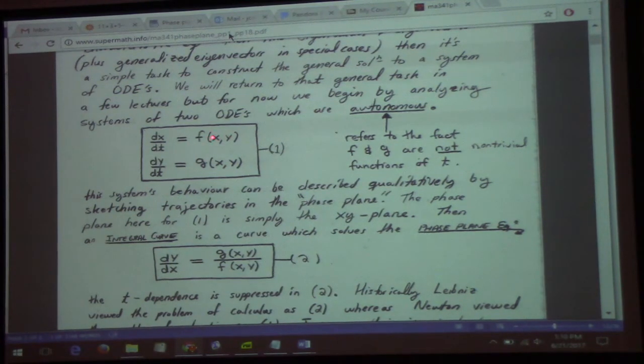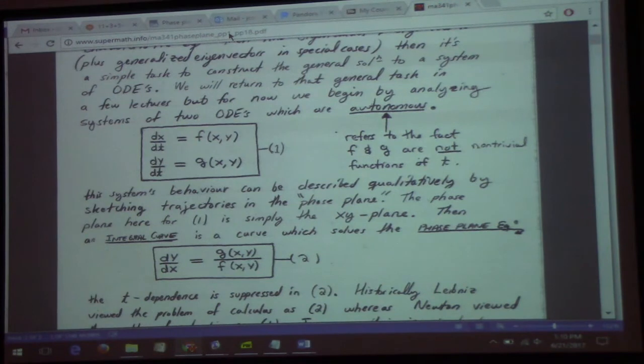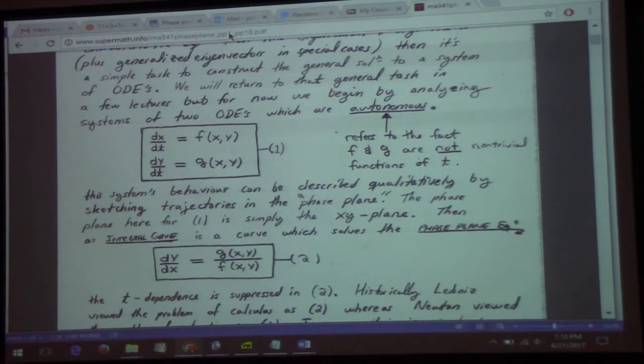For example, we just had f(x,y) equal to x plus 3y, and g(x,y) was like minus 3x minus 2y. Those are specific examples of autonomous systems. The systems we've been solving, homogeneous second order ones, have all been autonomous systems of two differential equations and two unknowns.